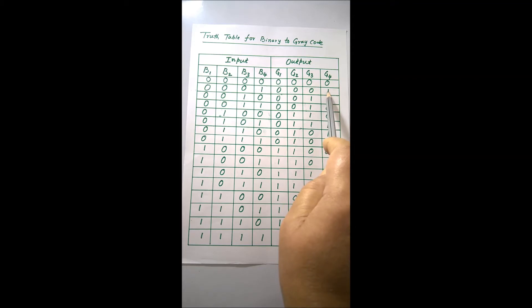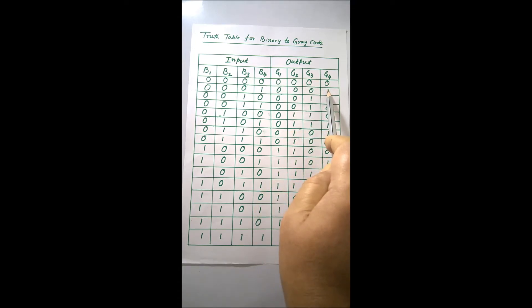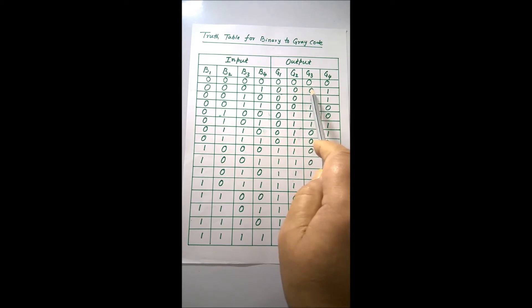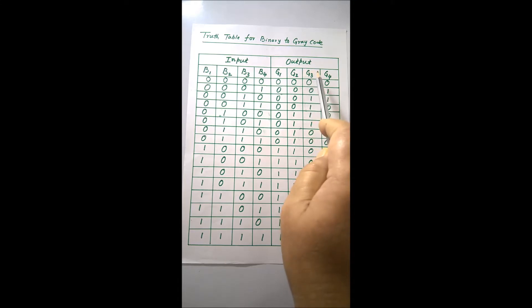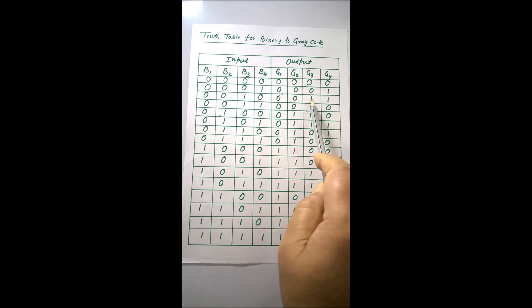Next time, again come to the least significant bit and complement it to get the next Gray code. Complementing the 1 gives 0000, but that is already an existing number, so it is rejected. Then come to the next bit and complement it; that gives 0011. Since 0011 is not already existing, it is accepted, so the next number will be 0011.